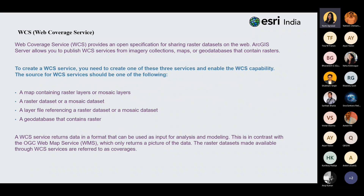The next service is WCS — web coverage service — which provides an open specification for sharing raster datasets on the web. ArcGIS server allows you to publish WCS services from imagery collections, maps, or geodatabases that contain rasters. To create a WCS service, you need to create one of these services and enable the WCS capability. Source data can be a map containing raster or mosaic layers, a raster dataset, a mosaic dataset, a layer referencing a raster dataset, or a geodatabase containing rasters. A WCS service returns data in a format usable as input for analysis and modeling — in contrast with WMS, which only returns a picture. Raster datasets made available through WCS are referred to as coverages.